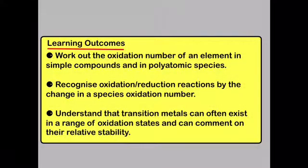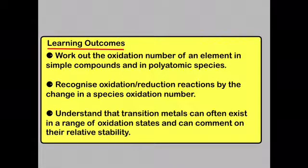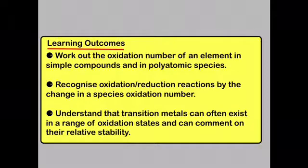So by now you should be able to work out the oxidation number of an element in both simple compounds and in polyatomic species. You should be able to recognise oxidation and reduction reactions by the change in the oxidation number of a species. And thirdly, you should understand that transition metals can often exist in a range of oxidation states and be able to comment on their relative stability.